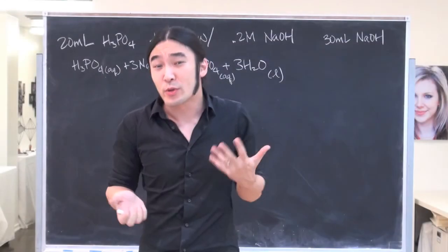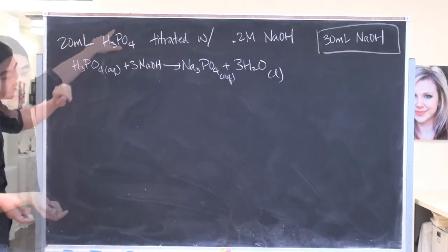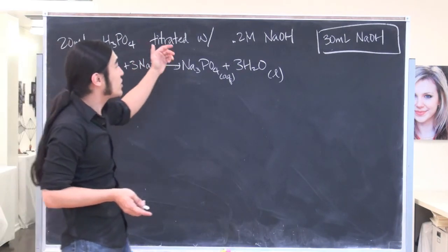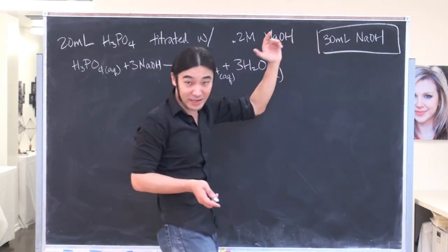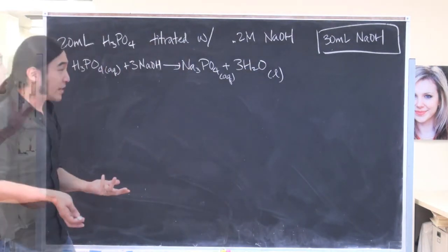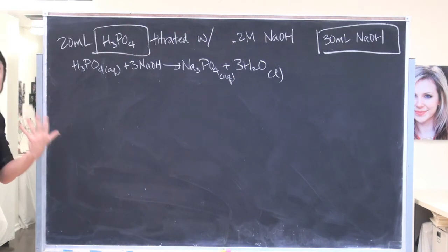So hey guys, this is just a quick problem for you guys that are in CHEM 105A. So this is my shorthand notation. 20 milliliters of H3PO4 titrated with 0.2 molar NaOH and it takes you 30 milliliters of NaOH before you hit the equivalence point. Now the question is, what was the concentration of your original H3PO4 solution?